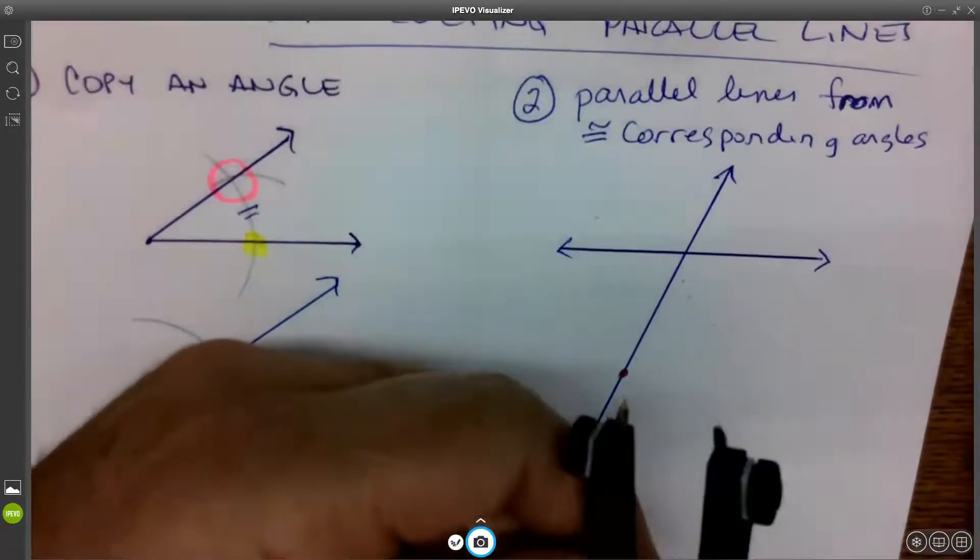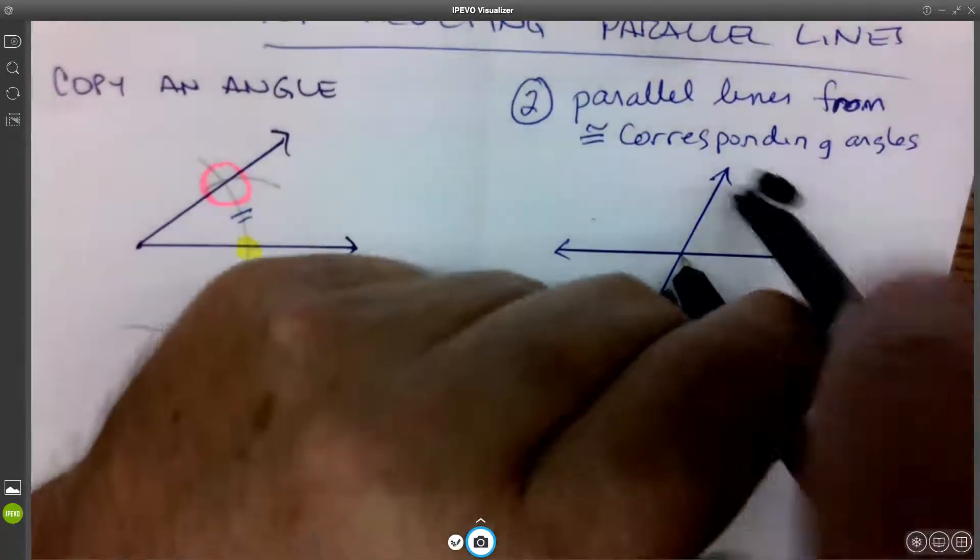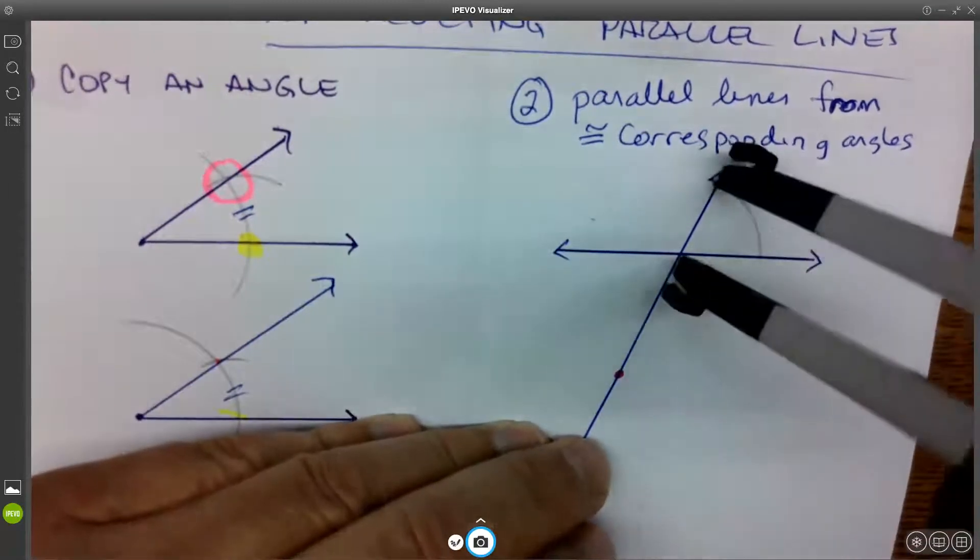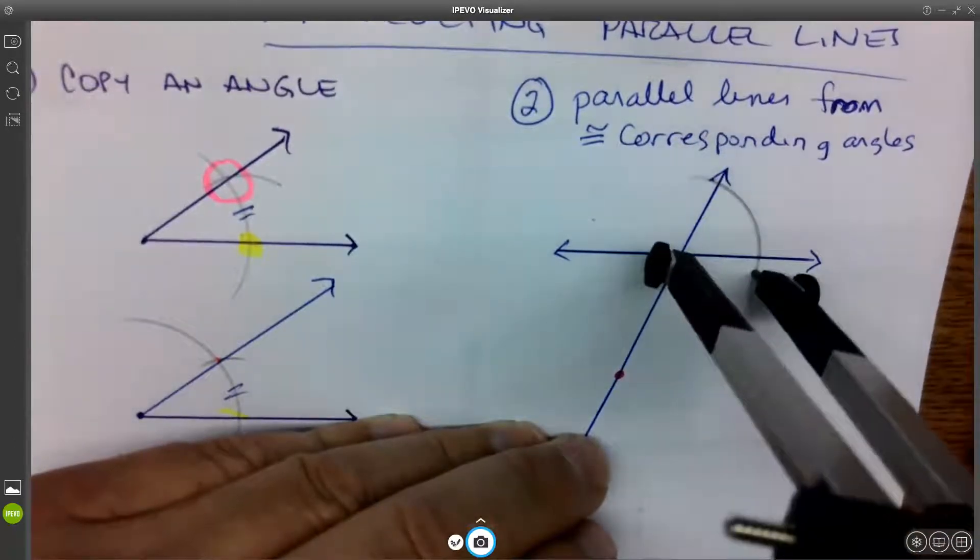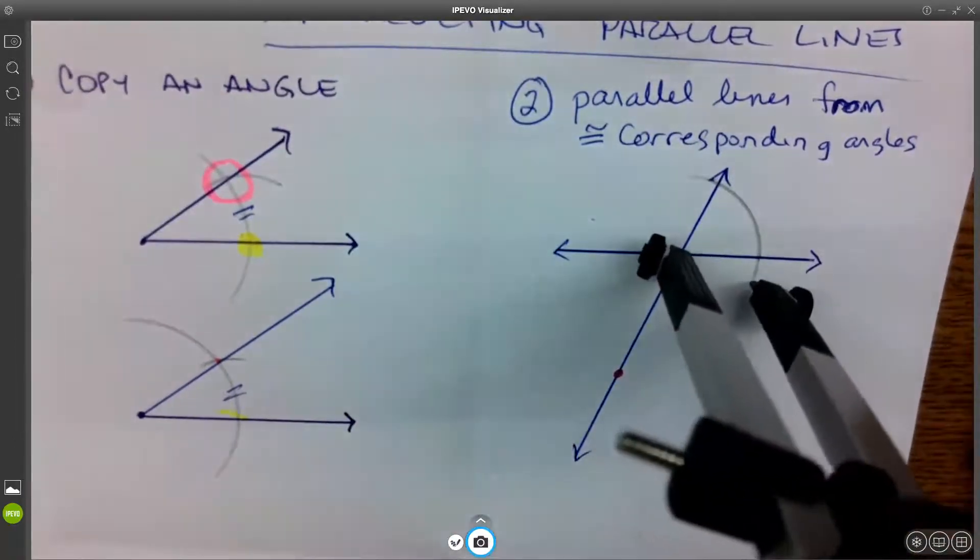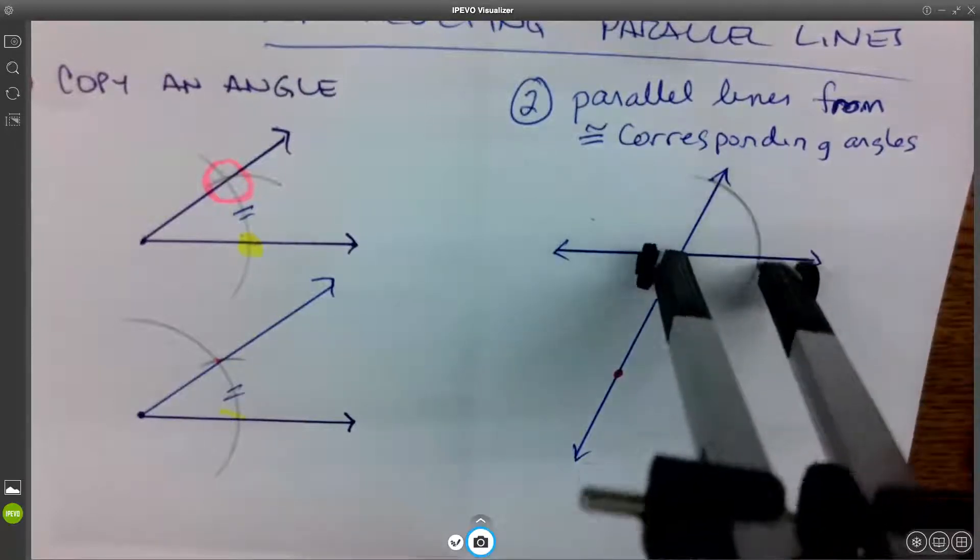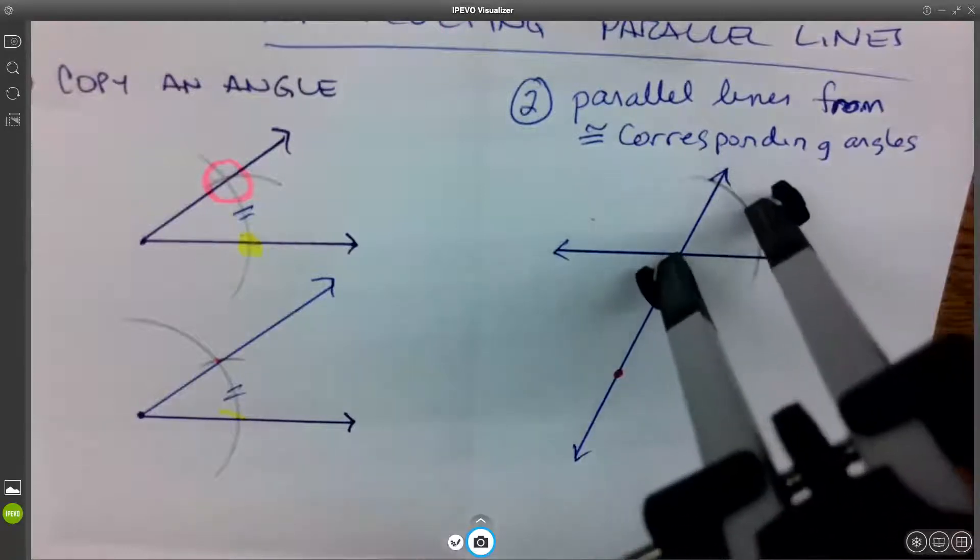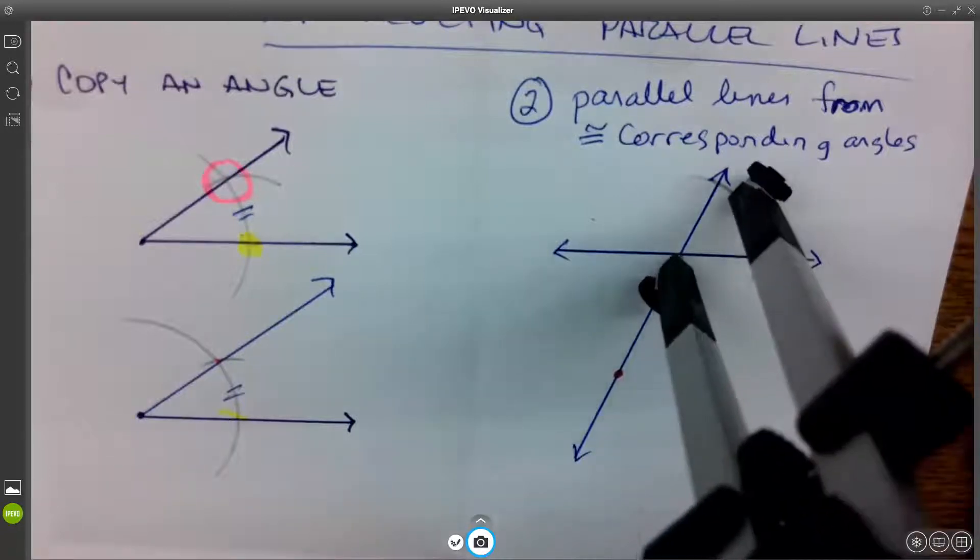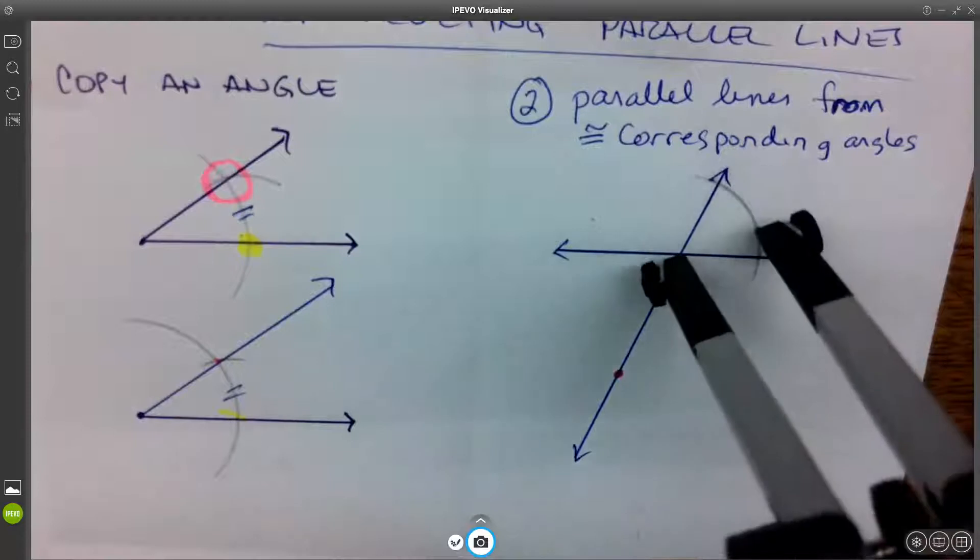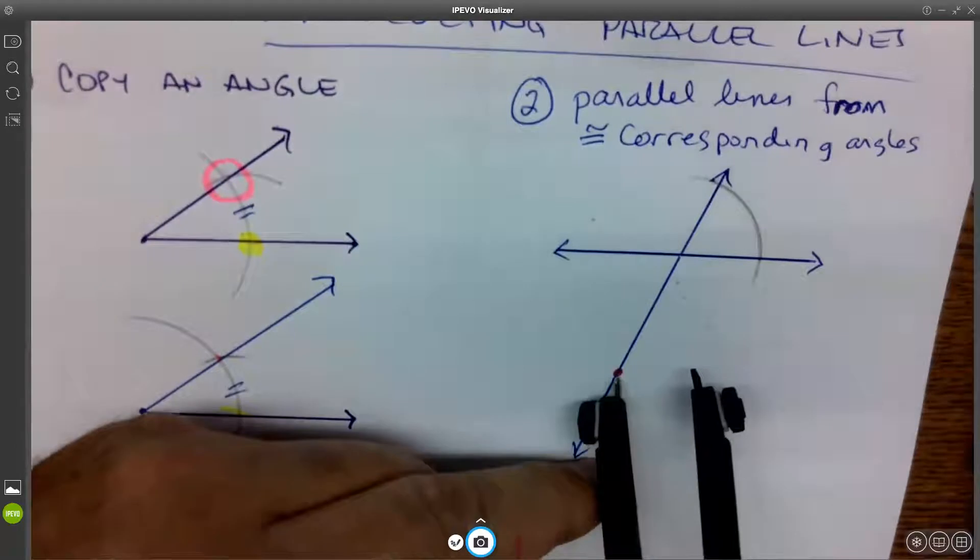So we start the same way. Doesn't matter what your compass is set at. As long as when you put your needle on this point of intersection, you can go over both rays. You have to hit both sides of your angle. And again, if it's slipping around and not sticking in well, get some paper underneath this. Once you've made that arc, pick up your compass and move the needle down to your dot.